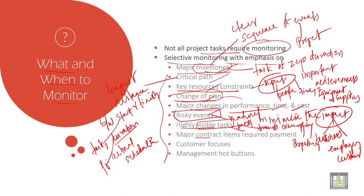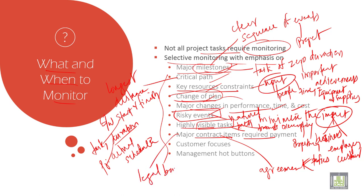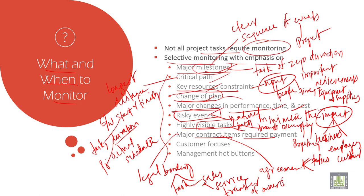Major contract items are required. A contract is an agreement between two parties to create a legal obligation to perform or refrain from performing a certain task. It can relate to almost any kind of transaction — it is a legal bonding to perform the task. It can be related to sales, service, and transfer of ownership, etc.